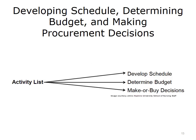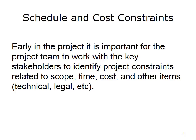The project team uses the activity lists generated from each work package to create the project schedule, determine the project budget, and make procurement or outsourcing decisions for the project. Project constraints must be identified and managed by the project team because of their impact on the performance of the project. Projects have constraints related to scope, time, cost, and other items such as technical and legal issues. Early in the project, it is important for the team to work with key stakeholders and ask questions about constraints so they can plan the project schedule, budget, and procurement activities.